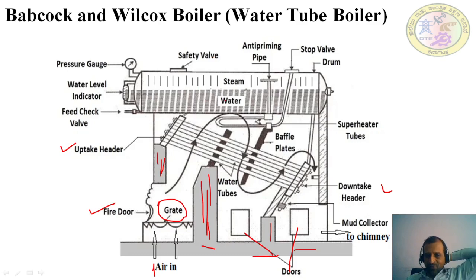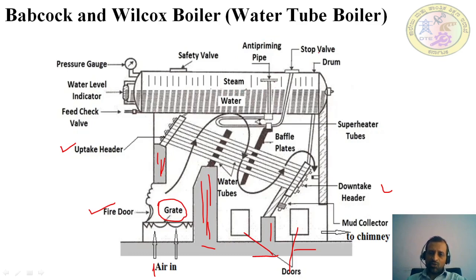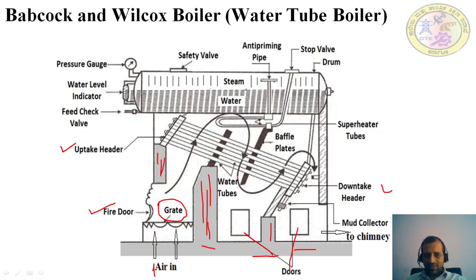If the pressure exceeds the maximum, the safety valve opens to make the boiler safe. The anti-priming pipe is used because steam can contain some water particles; those water particles are separated by the anti-priming pipe. Through the stop valve you can get the steam for further applications. There is also a superheater tube here.